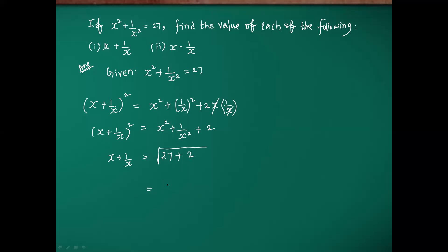When I add this together, what I am getting 29. But root in the sense here, you will get the plus or minus because inside a value may be positive or may be negative. So x plus 1 by x value we got it: plus or minus square root of 29. By using equation 1 only, I got this is 27.